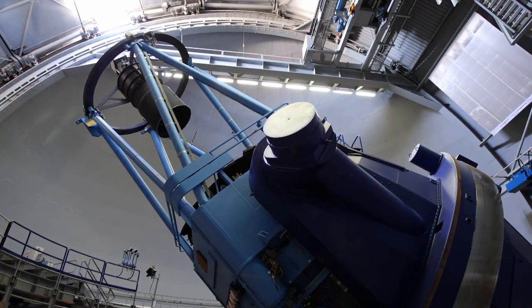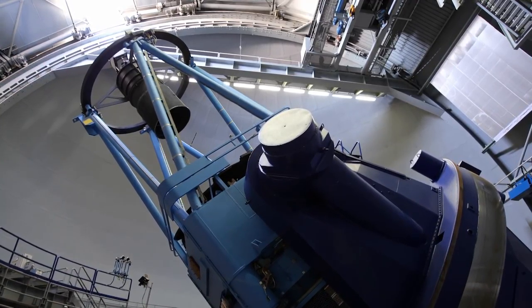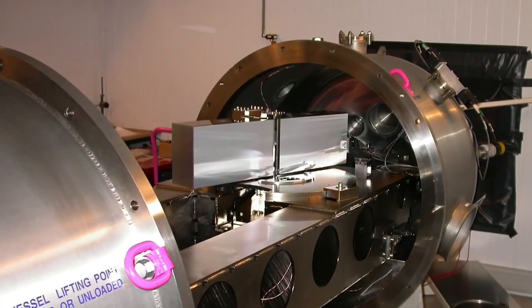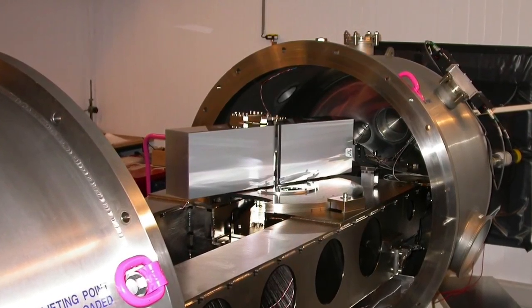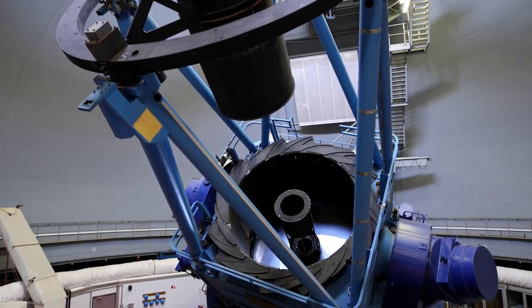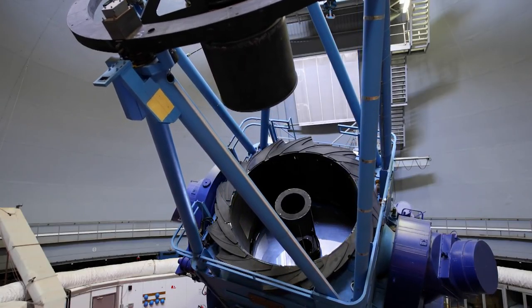HARPS, installed on the ESO 3.6-meter telescope at the La Silla Observatory, is the world's foremost exoplanet hunter. It's the most successful finder of low-mass exoplanets to date.